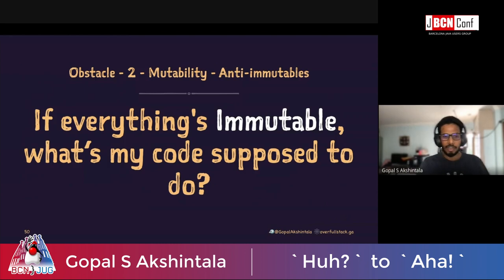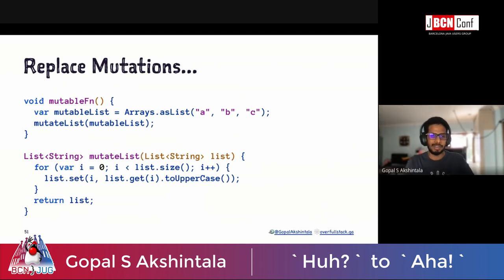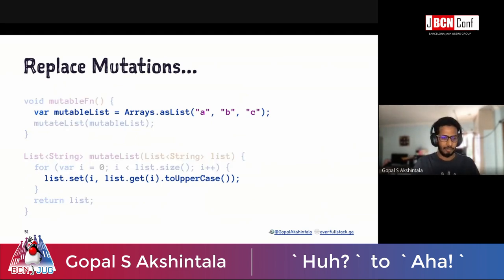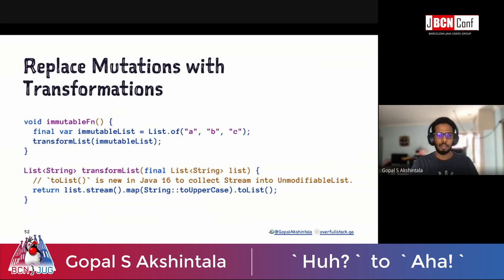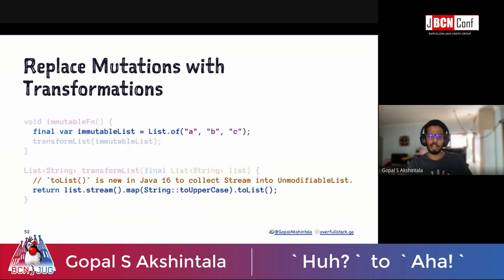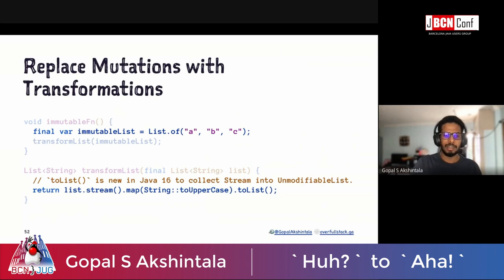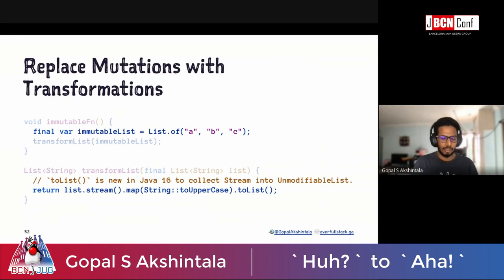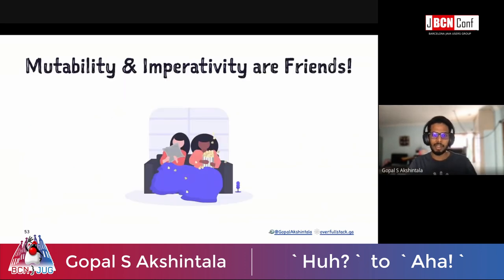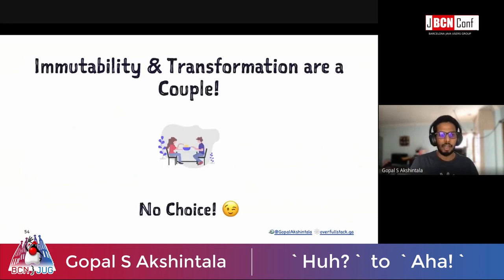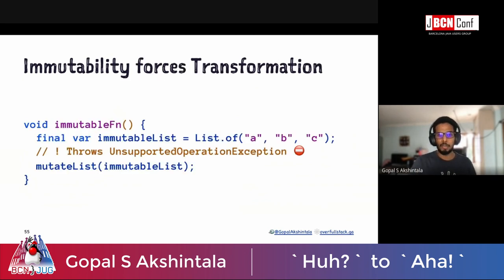If everything is immutable, what is code supposed to do? Code is supposed to operate on state. If you have a mutable list, that invites imperative mutation. But if you replace it with an immutable list, you have no choice but to use transformation instead — taking one list, transforming the objects in it, and preparing a new list rather than tinkering with the original. Mutability and imperativeness are friends; immutability and transformation are like a couple — they have to live together. Immutability forces transformation.